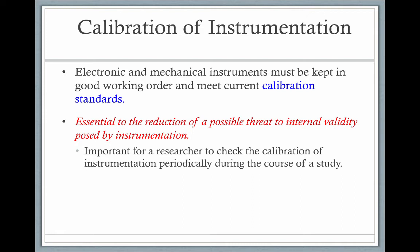Electronic and mechanical instruments must be kept in good working order to meet current calibration standards. This is essential to reducing a possible threat to internal validity. Calibration confirms the equipment is doing what it's supposed to do. It's important for a researcher to check calibration periodically during the course of the study to make sure nothing has changed from one subject to another.